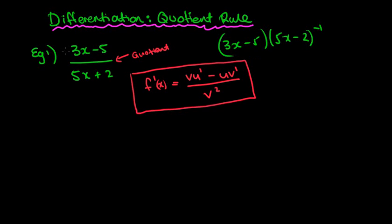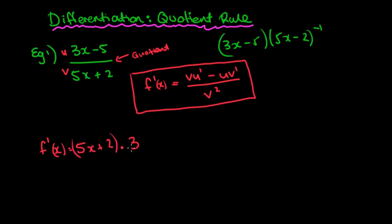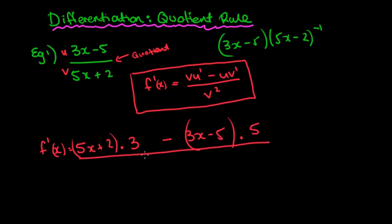The quotient rule states that (v·u' - u·v') / v² gives you the derivative, where u is on top and v is on the bottom. So for this question: v is simply (5x + 2), multiplied by u', which means we differentiate (3x - 5) — that just becomes 3. Then we subtract u·v', so u is (3x - 5) and we multiply by the derivative of v, which is 5.